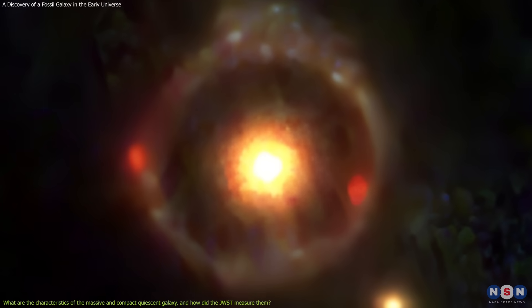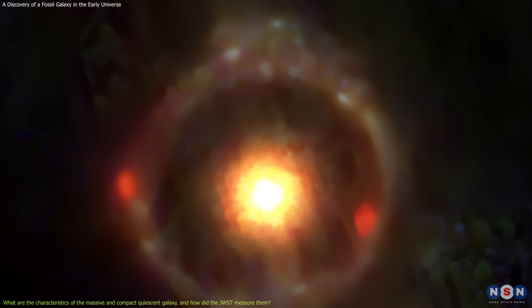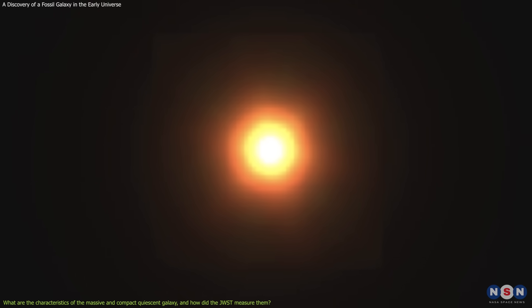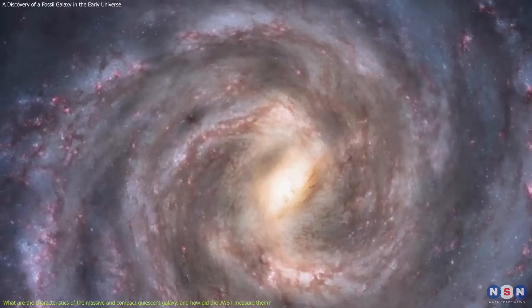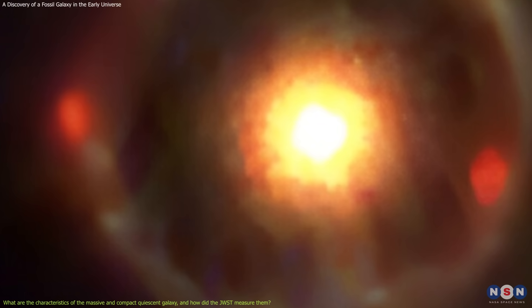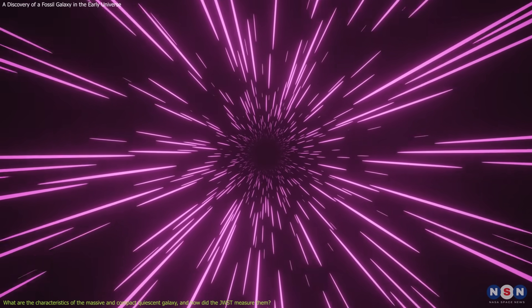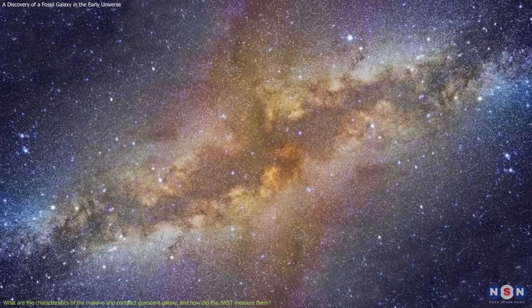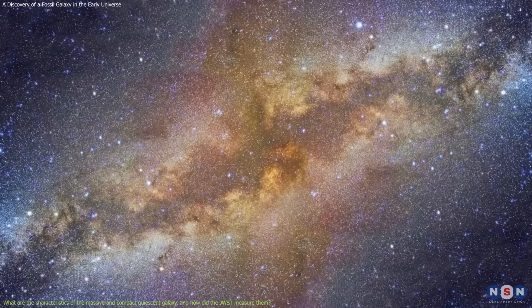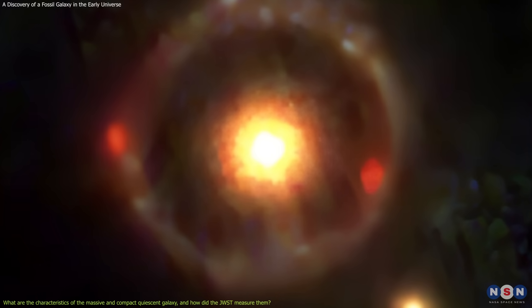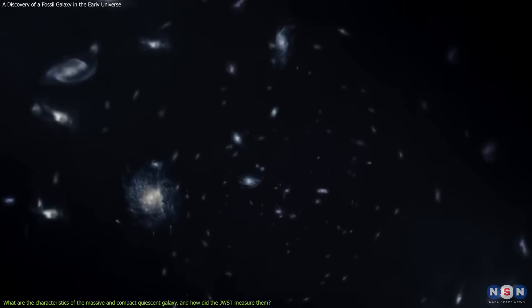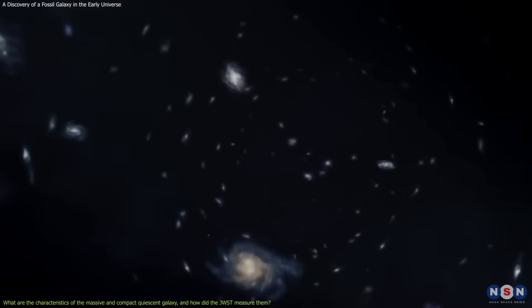However, the quiescent galaxy that Webb discovered is one of the most extreme examples of this type of galaxy. It has a mass of about 300 billion times the mass of the Sun, which is comparable to the mass of the Milky Way. However, it has a size of only about 1.5 kiloparsecs, which is about 5,000 light-years, which is about 20 times smaller than the size of the Milky Way. This means that this galaxy is very dense, with a stellar mass density of about 1,000 times higher than the average density of the universe.